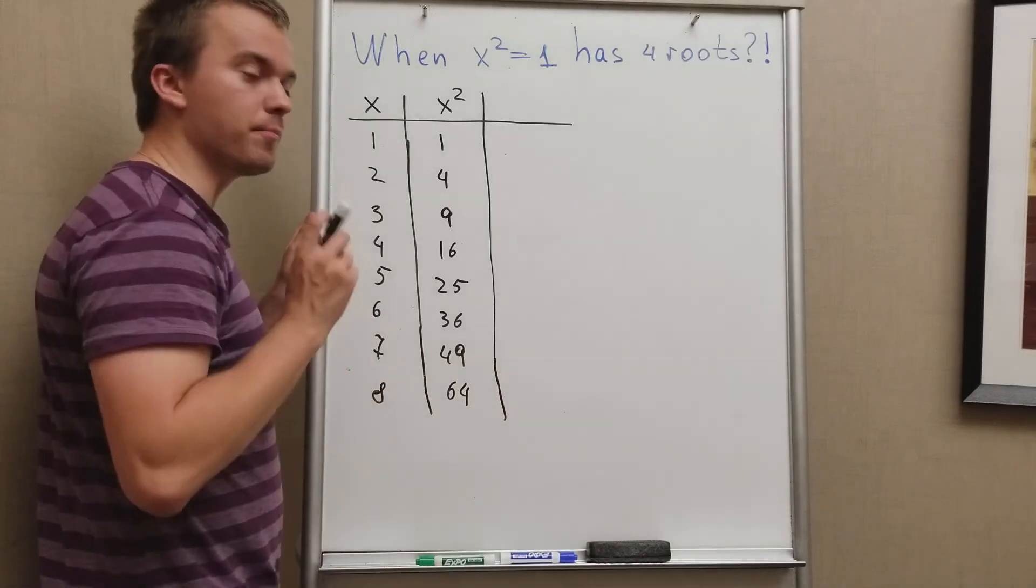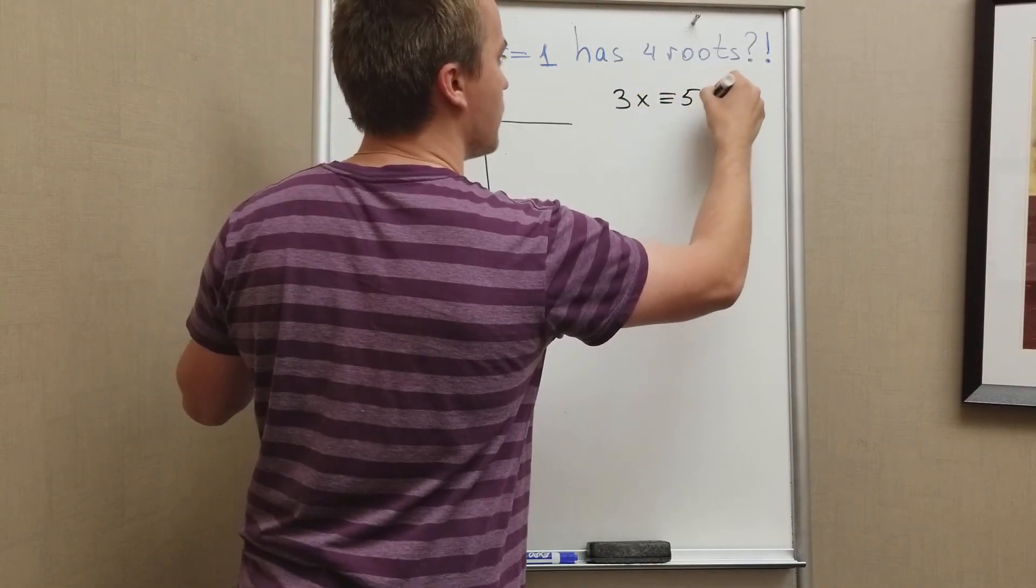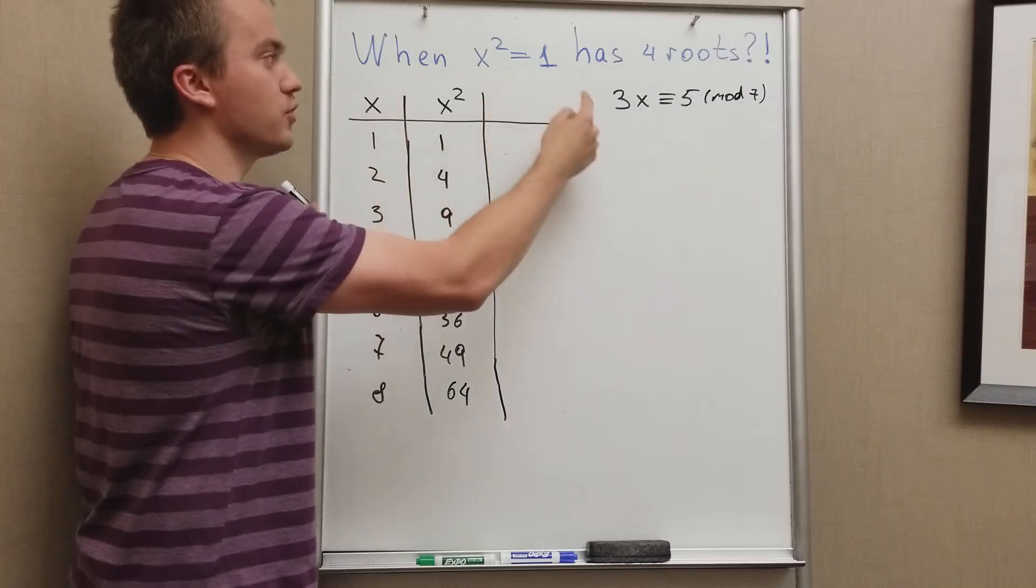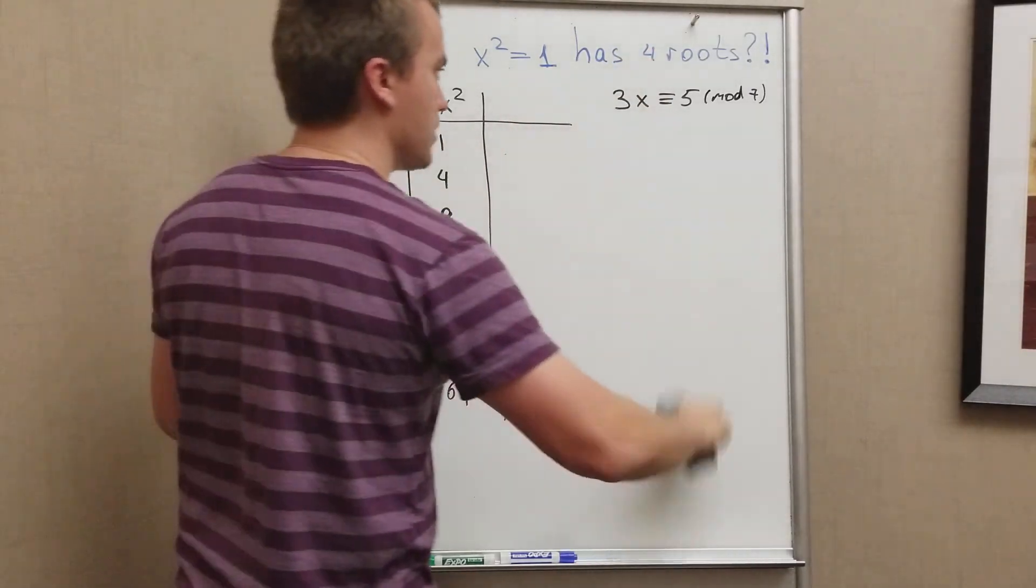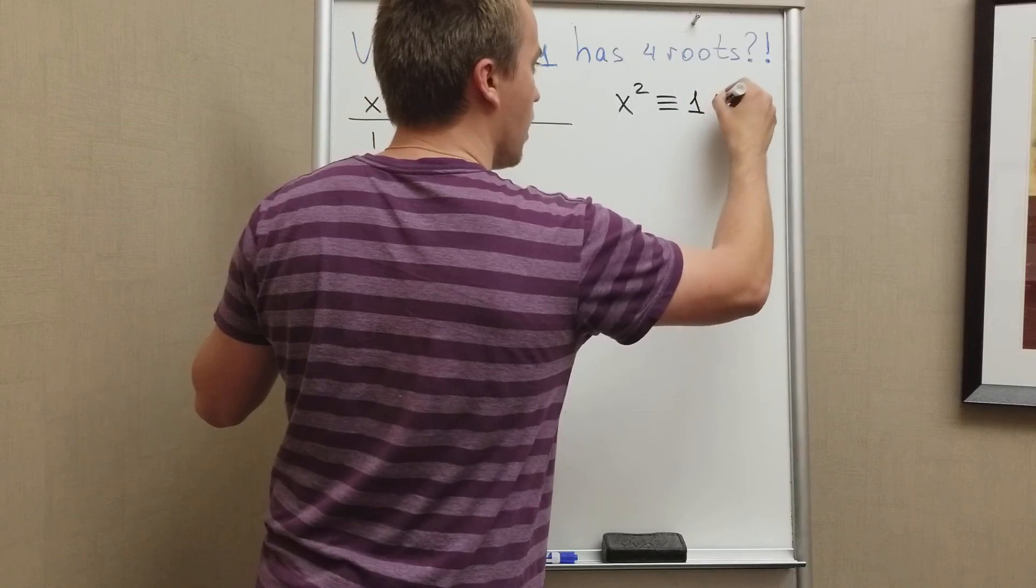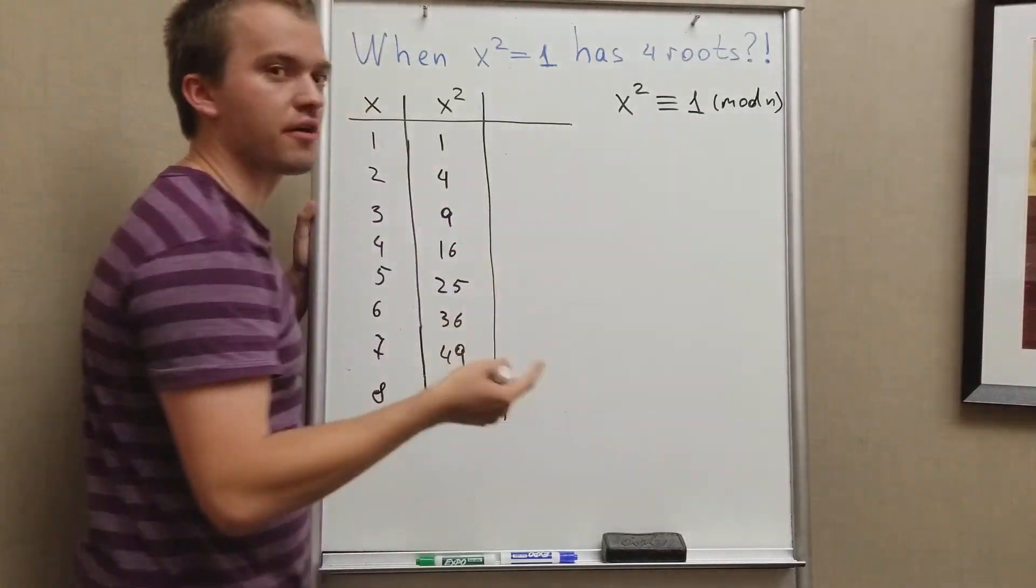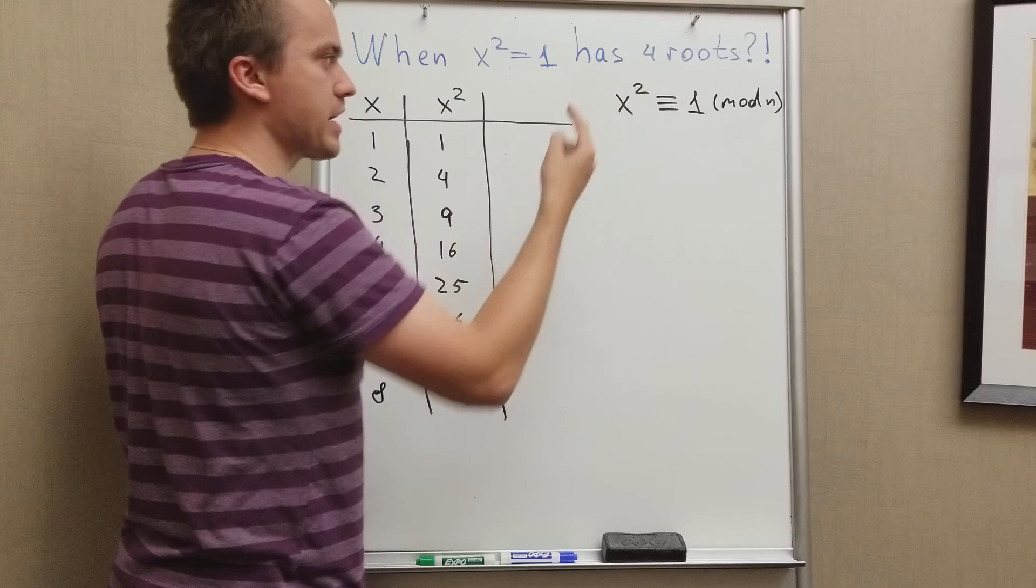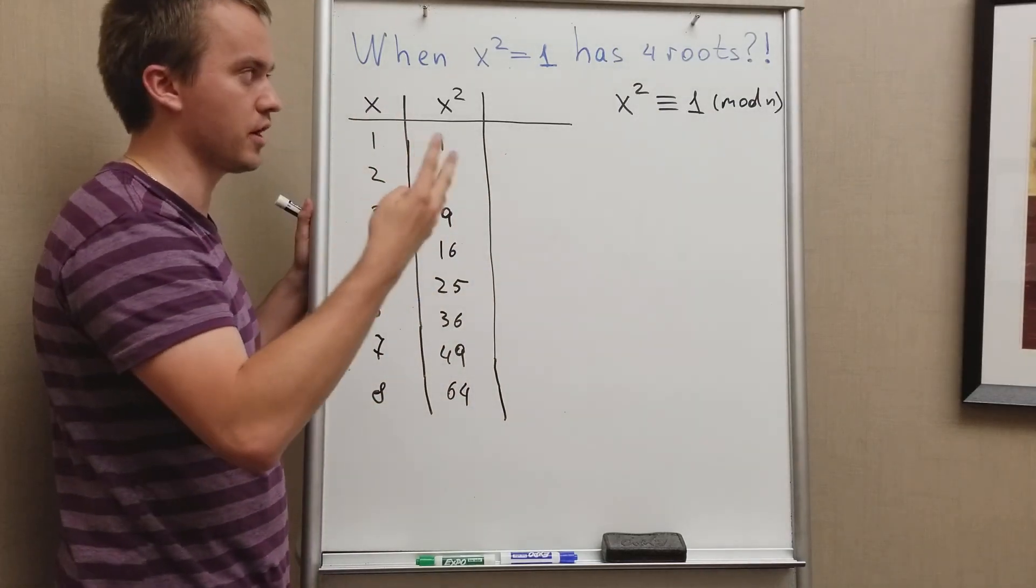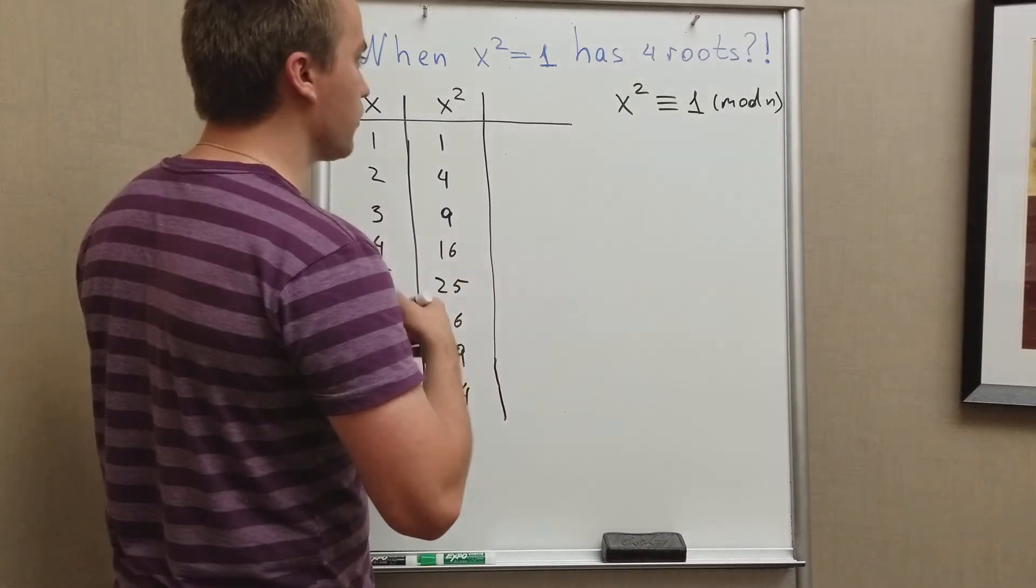And what I'm going to do, Blackpenredpen discusses solutions of some equations like 3x congruent to 5 mod 7. And actually our equation can have four roots by using congruence relations. So what I'm saying is if I consider x squared congruent to one mod n, then I can find some n such that this equation will have four roots. So even if my power is two, this equation can have not just at most two roots, but it's gonna have four.